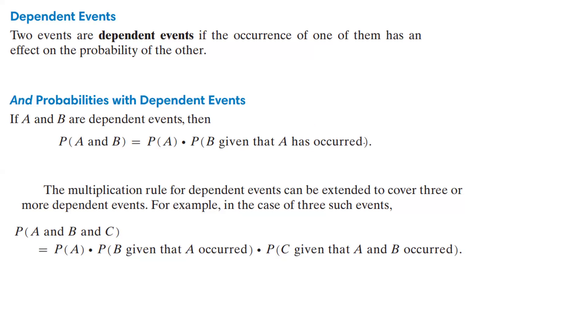Now, for probabilities with dependent events: if A and B are dependent, then the probability of A and B is equal to the probability of A times the probability of B given that A has occurred. So we've already had A occur, and we have to figure out the probability that B is going to occur with that.